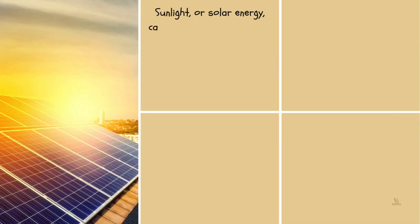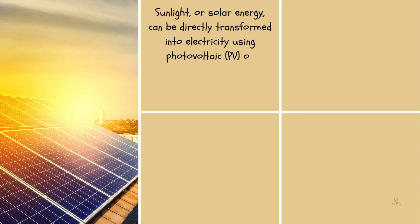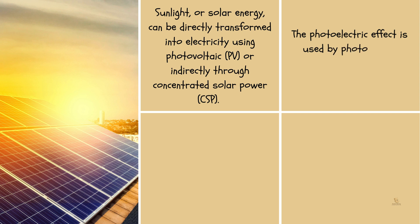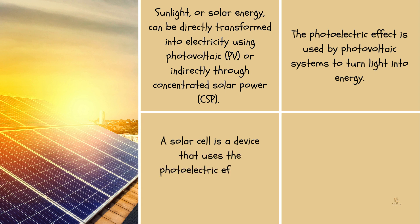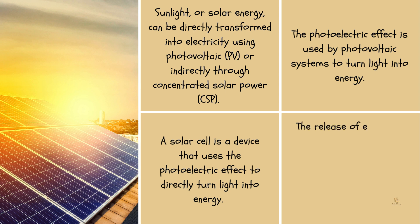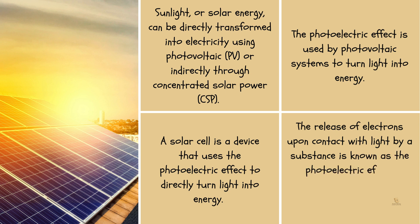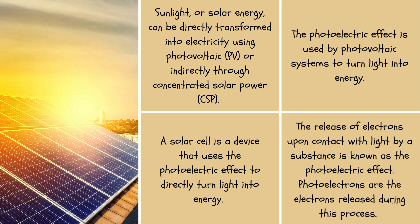Sunlight, or solar energy, can be directly transformed into electricity using photovoltaic (PV), or indirectly through concentrated solar power (CSP). The photoelectric effect is used by photovoltaic systems to turn light into energy. A solar cell is a device that uses the photoelectric effect to directly turn light into energy. The release of electrons upon contact with light by a substance is known as the photoelectric effect. Photoelectrons are the electrons released during this process.